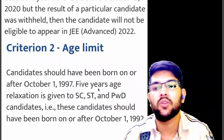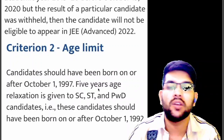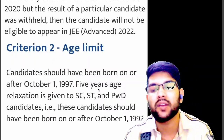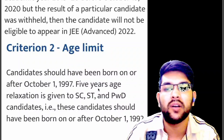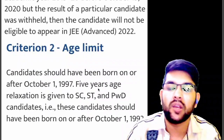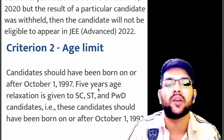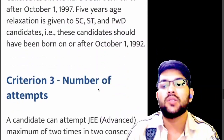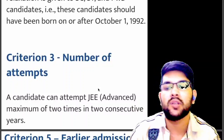The age limit criteria: your date of birth should be on or after 1st October 1997. For SC/ST/PWD students, there's a five-year relaxation — your birth date should be on or after 1st October 1992. This relaxation means SC/ST/PWD candidates are considered as younger students even if they are up to five years older.